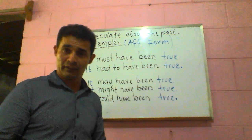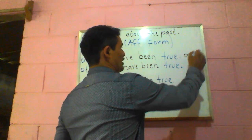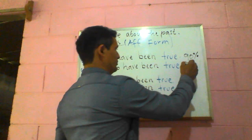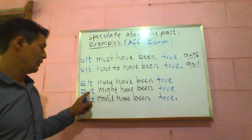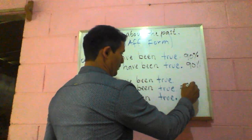Do you believe it? If we are not so sure about that, we can say 'it may have been true,' 'it might have been true,' 'it could have been true.' Here we have a 50% certainty — we are not so sure about that.